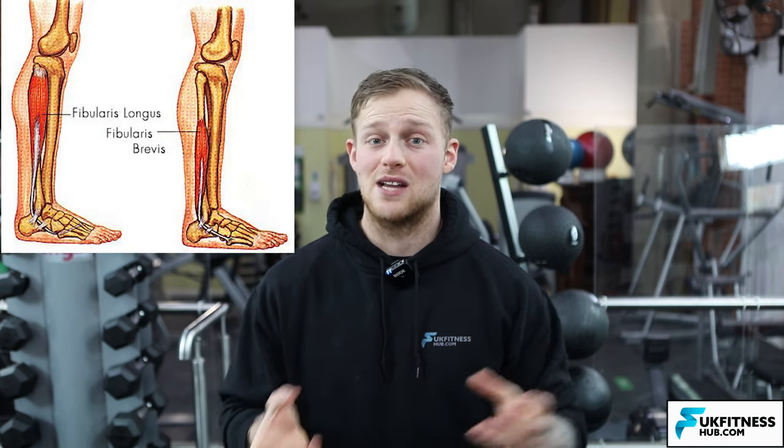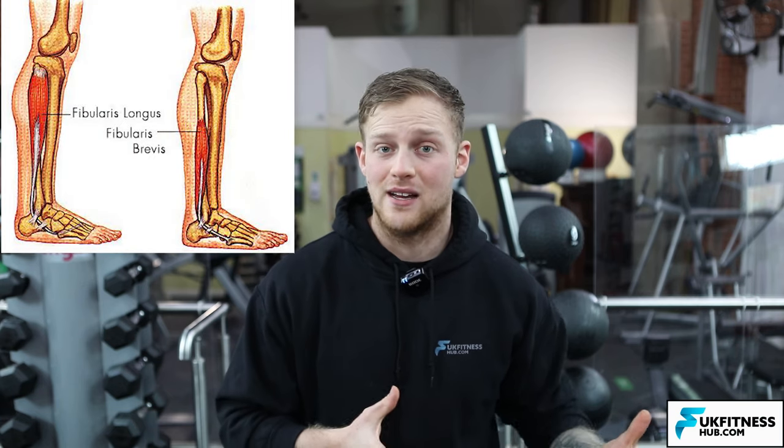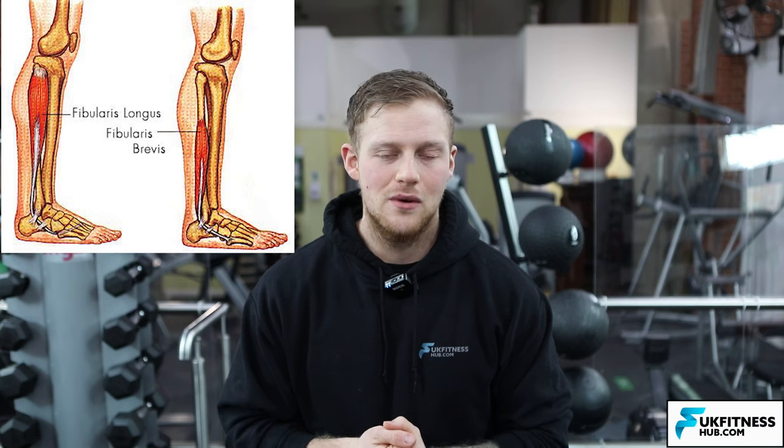There are two peroneal tendons, which means there must be two peroneal muscles. In the UK we call these muscles the fibularis longus and the fibularis brevis, because these muscles attach to the fibula. You may also have heard them referred to as the peroneus longus and the peroneus brevis. I'll refer to them by the UK names in this video.